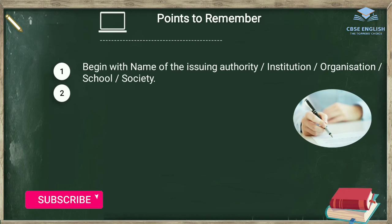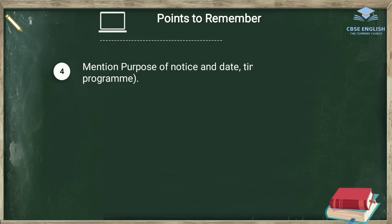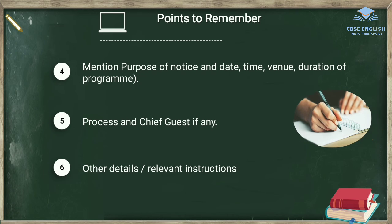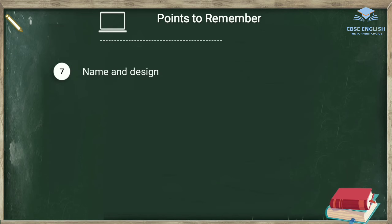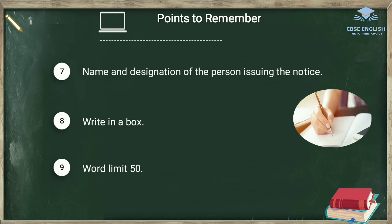Here are the points to remember. Begin with the name of the issuing authority, institution, organization, school, or society. Then write NOTICE — N-O-T-I-C-E — in block letters. Then write the date on the left-hand side. Mention the purpose of the notice, and the date, time, venue, and duration of the program. Then write the process and chief guest if any, and other relevant or appropriate instructions. Finally, write the name and designation of the person issuing the notice and put this notice in a box. Remember, the word limit is 50 and marks are only 3 — we can earn 3 out of 3 marks very easily.